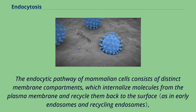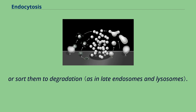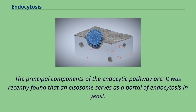The endocytic pathway of mammalian cells consists of distinct membrane compartments, which internalize molecules from the plasma membrane and recycle them back to the surface, or sort them to degradation. The principal components of the endocytic pathway are described below.